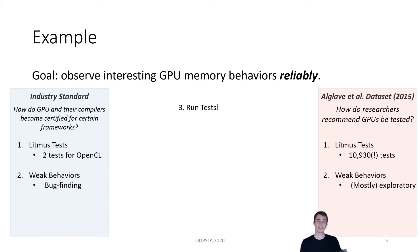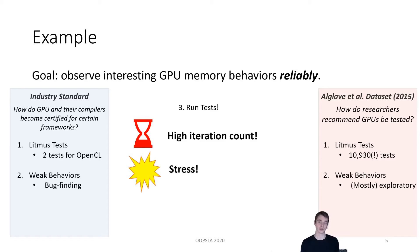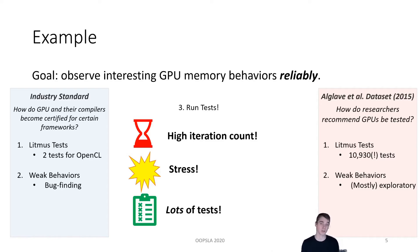Now finally, we need to run our tests, and there are a few more considerations here, some of which we will talk about later in more detail. First off, we need a high enough iteration count so that we see a wide range of behaviors, but we also want it low enough so that it doesn't take all day. We need to stress the GPU to induce it to show interesting behavior at all, and we're going to talk a bit more about what that means later. And finally, we need lots of tests, lots of different shifts, and a whole lot of different testing scenarios.